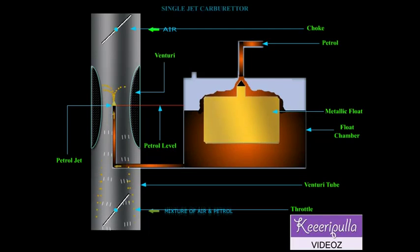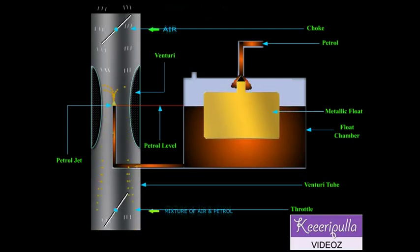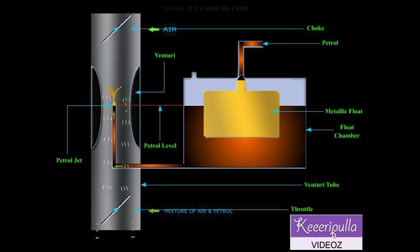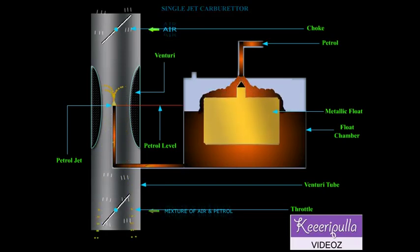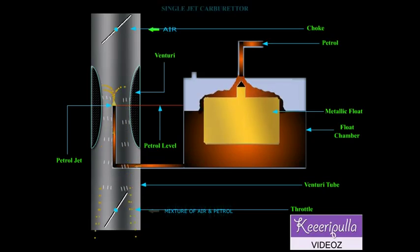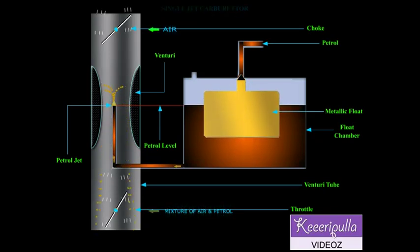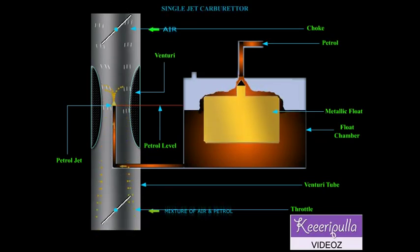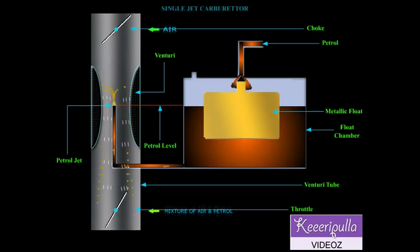The pressure at the float chamber is atmospheric and at the tip of the jet is below atmospheric. Therefore, a pressure differential called carburetor depression exists between them.